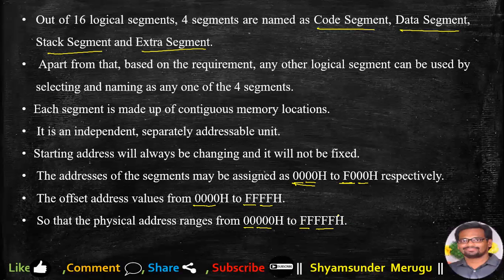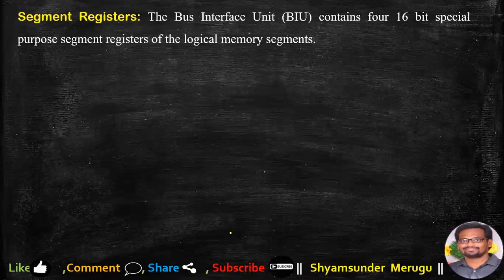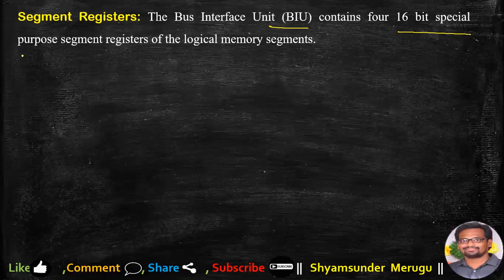These are the 20-bit addresses. There is another video on physical address generation — please watch that video to get the concept of how to calculate the physical address in the 8086 microprocessor. Now, there are 16 segments in memory, and in the bus interface unit we have 16-bit special purpose segment registers which are related to the logical memory segments.